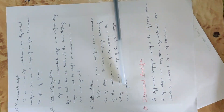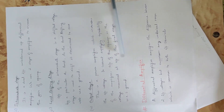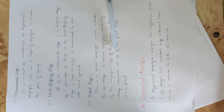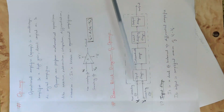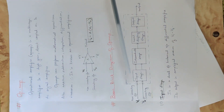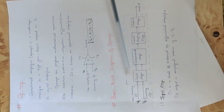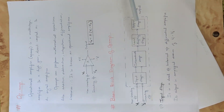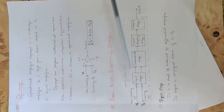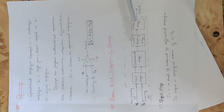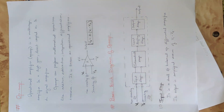The voltage is measured with respect to ground at the output of the Op Amp. This completes the Basic Block Diagram of Op Amp. We have four stages: Input Stage, Intermediate Stage, Level Shifting Stage, and Output Stage.